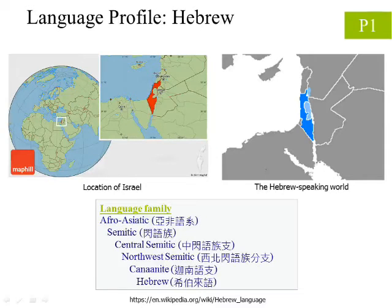Before we start, let us first briefly introduce the Hebrew language. The users of the language are mostly based in Israel. The red area on the left is the location of the country. On the right, the dark blue area indicates where Hebrew is a majority language, namely Israel, while the lighter blue is where Hebrew is a minority language.